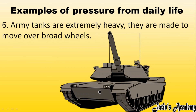Next, army tanks are extremely heavy, but their wheels are made broad. Why are the wheels made broad? Broad means more area, and more area means less pressure exerted on the ground, so they cannot sink into the ground due to their weight. That is why they are given broad wheels — so that area can increase and pressure can reduce on the surface.